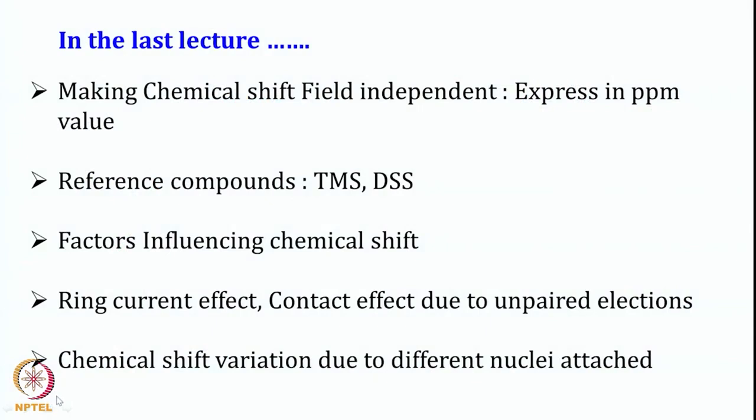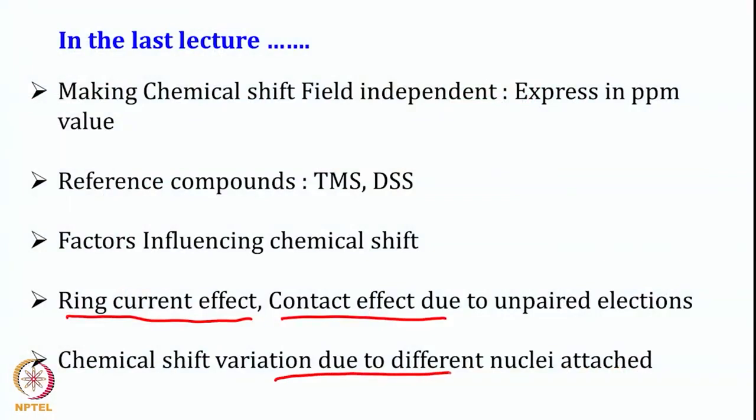TMS is highly shielded and that is how it is used as a reference. DSS on the other hand is water soluble, does not interact with any biomolecules, and is used for water soluble compounds. Next we looked at what factors influence chemical shift, and out of those we looked at what ring current can do. Ring current causes the downfield shift or higher PPM shift of CH protons of aromatic compounds. We also looked at the contact effect, which comes because of unpaired electrons and can shift chemical shift significantly. After that we looked at chemical shift variation due to different nuclei attached.